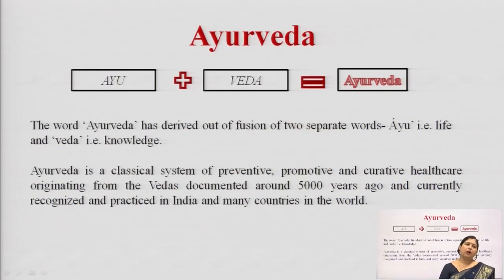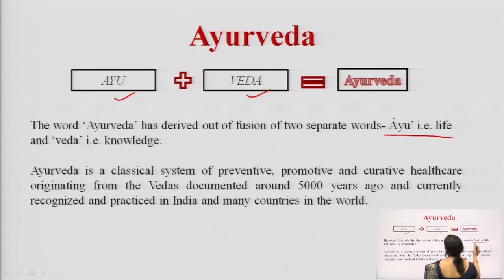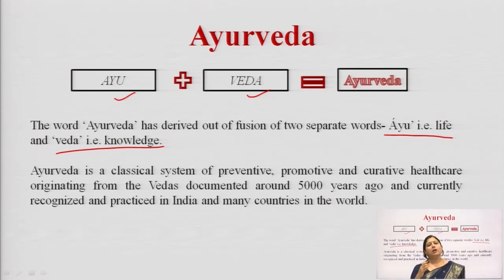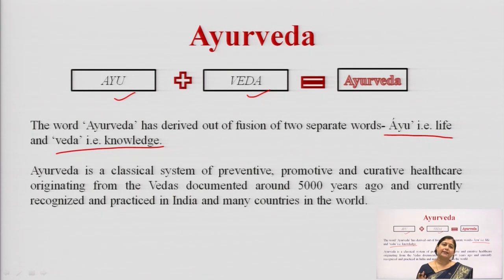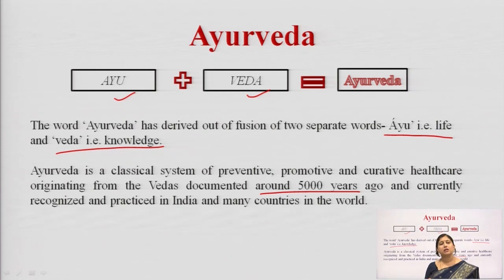In the last class we discussed the role of pharmacognosy in the allopathic system of medicine. So, what is Ayurveda? Ayurveda is made up of two words: Ayu and Veda. Ayu means life while Veda means knowledge. Together, the knowledge of life is the literal meaning of Ayurveda, and its mention is there in traditional texts like Atharva Veda and Yajur Veda, around 5000 years ago.